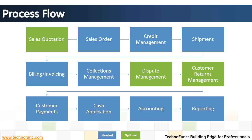Shipment: sending the goods to the ship-to location and sending the invoice to the bill-to location. Billing and invoicing: sending the invoice to the customer that is fully compliant with the legal framework. Collections management: reminding the customer, issuing dunning letters, and collecting the money. Dispute management: addressing disputes or adjustments due to various reasons.